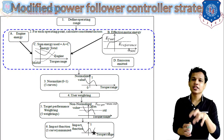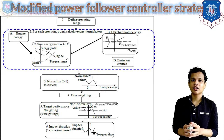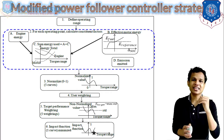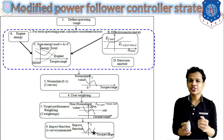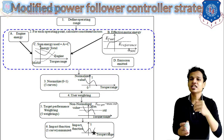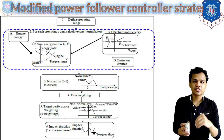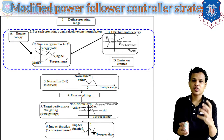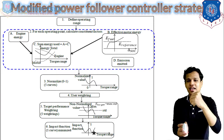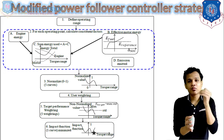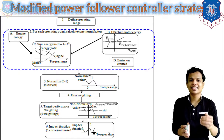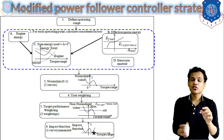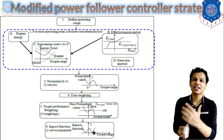Here we can see a simple algorithm which defines how the controller works in the case of modified power follower technology. First, we define the operating range — the range in which the vehicle is going to work. After that, for each operating point, we calculate the constituent factors. The factors are: first, engine energy; second, effective battery energy. We also calculate the sum — that is, the total energy from engine plus battery. And we also see the D factor, which is the emissions emitted from the engine.